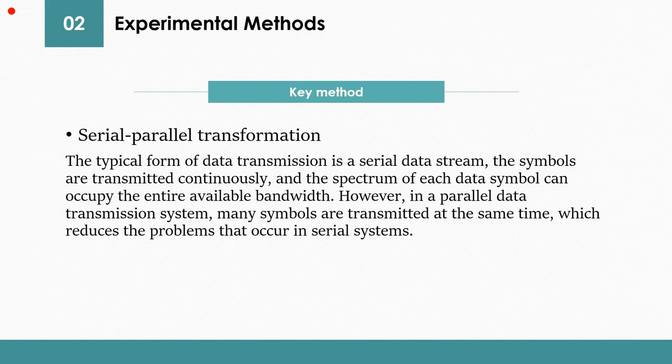The typical form of data transmission in a serial data stream, the symbols are transmitted continuously and the spectrum of each data symbol can occupy the entire available bandwidth. However, in a parallel data transmission system, many symbols are transmitted at the same time, which reduces the problems that occur in a serial system. In an OFDM system, the rate of each transmission symbol is between tens of bits per second to tens of kilobits per second. So serial conversion must be performed to convert the input serial bit string into OFDM parallel symbols that can be transmitted.